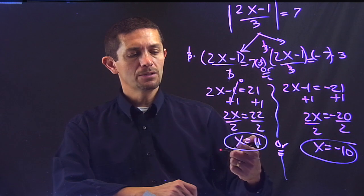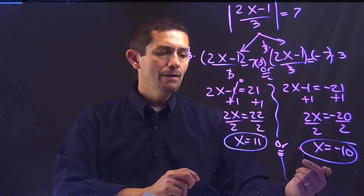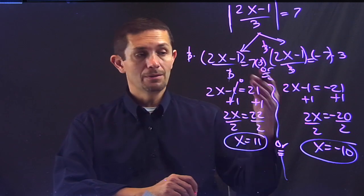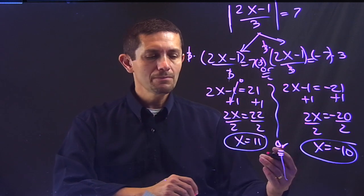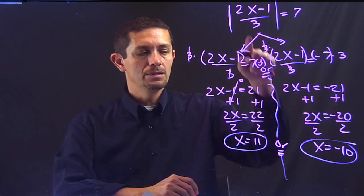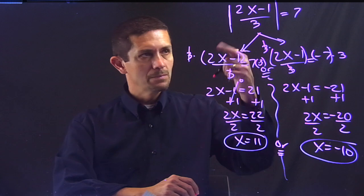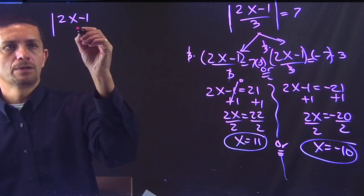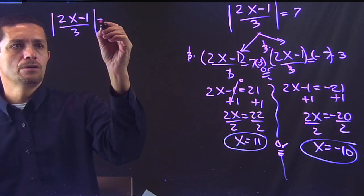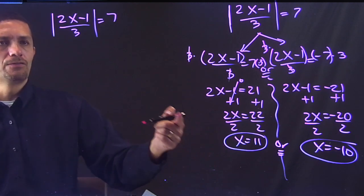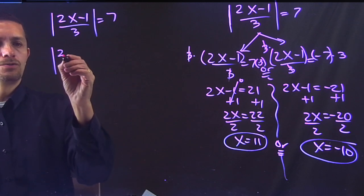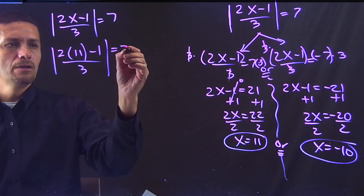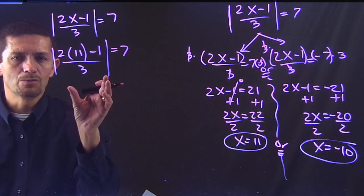So my answer would be x equals 11 or x equals negative 10. Now, something that you might want to do is, every time you're solving something with a long process like this, you might want to unplug those answers back and see if it works. Let's replace. So I'm going to have absolute value of 2x minus 1 over 3 equals 7. Let's plug the x equals 11 first. So 2 times 11 minus 1 over 3 equals 7. I'm not erasing the absolute value.